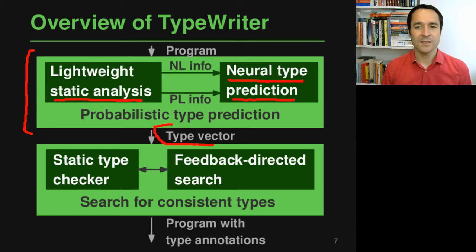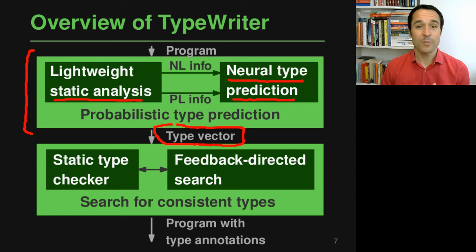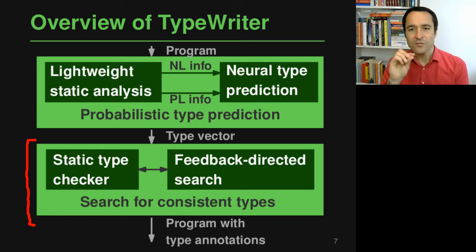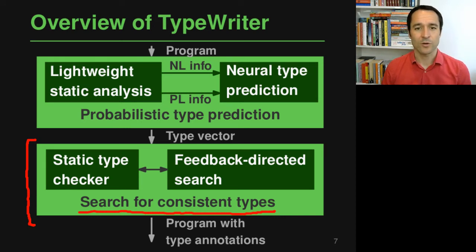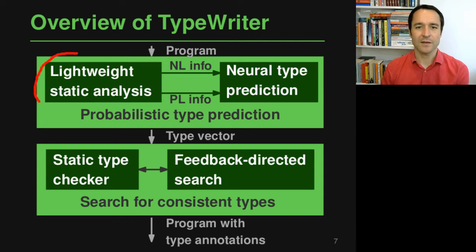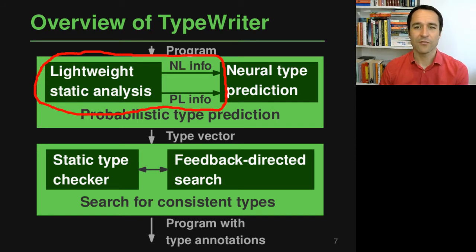At the end of the first step we get a type vector for every piece of code where a type is missing — for example for a return type of an unannotated function — which can be interpreted as a probability distribution over possible types. Given these type vectors, the second step combines the different predictions for different code elements using a search approach that looks for a consistent way of adding types, meaning the program at the end is type-correct according to the gradual type checker.